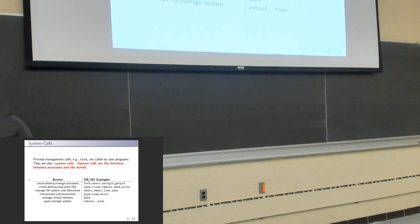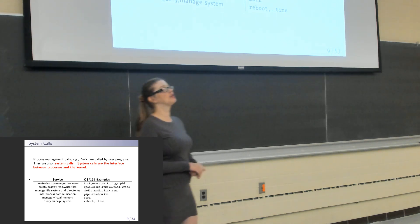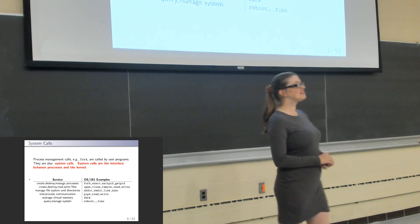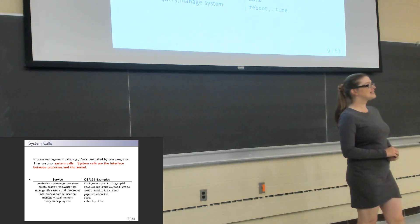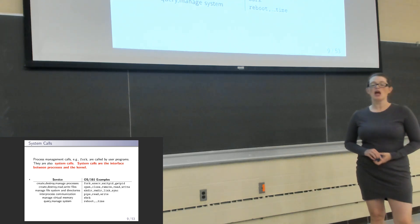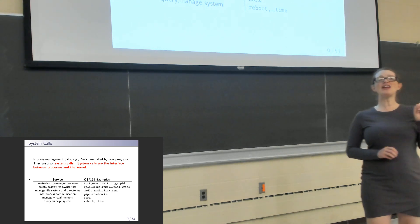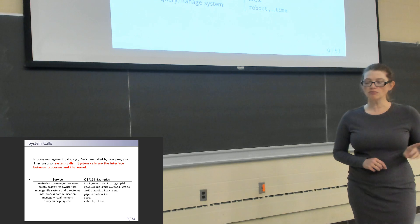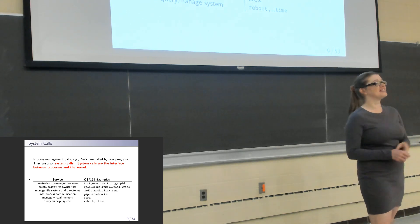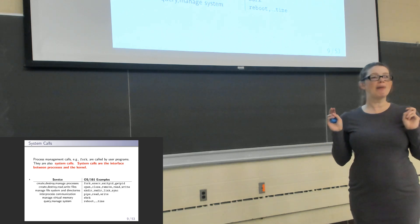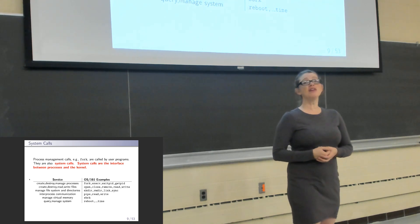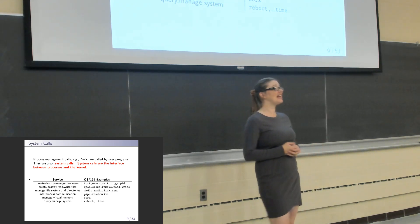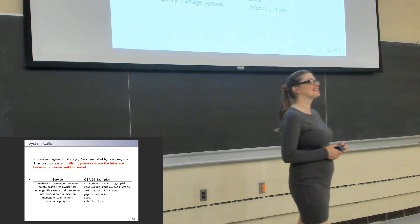So we've got fork to create the process, execv to change the program the process is running, getpid which returns the PID of the current running process, and exit to terminate the calling process. When we call exit, if the process has a living parent, we want to leave the terminating process's exit status behind — i.e., the parameter we pass to exit — so we can learn about how did this process die and what was its exit code.